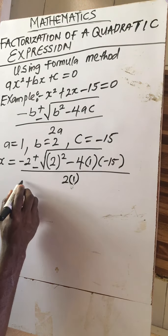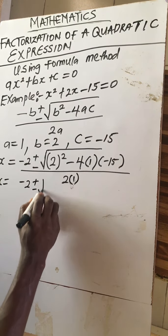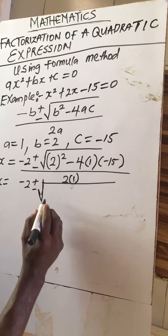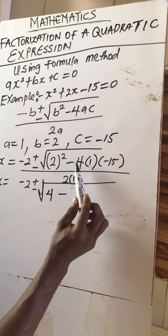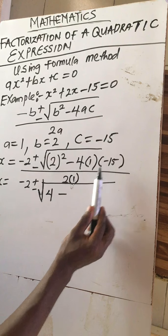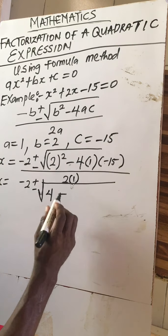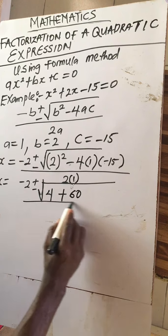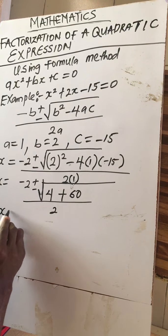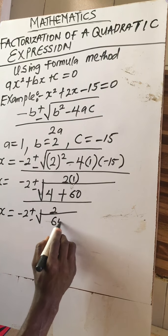We simplify: minus two plus or minus the square root. Multiplying out the terms, the negative signs change to plus, so we have plus 60, giving us the square root of four plus 60, all over two.